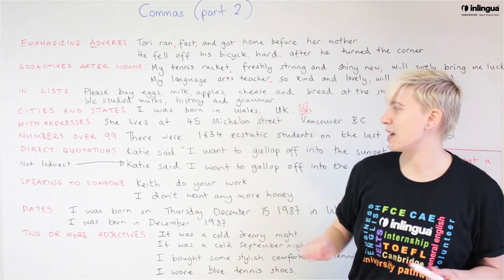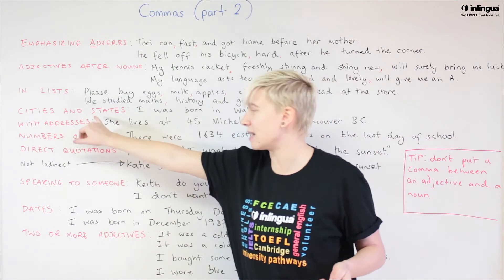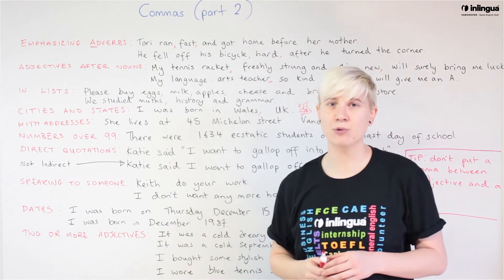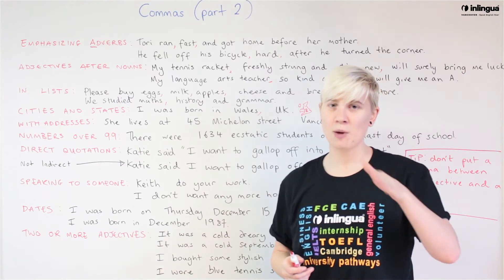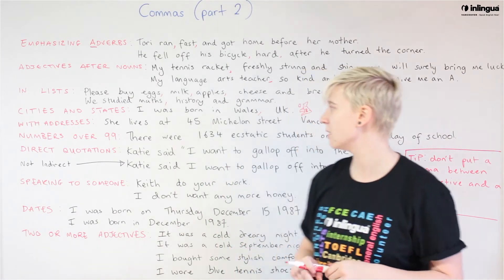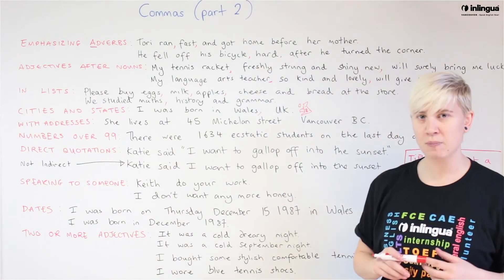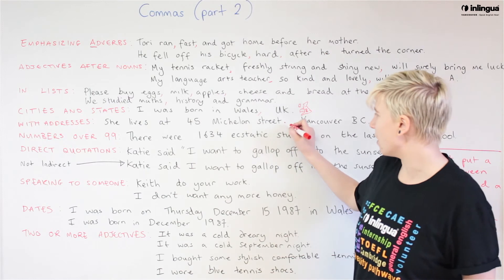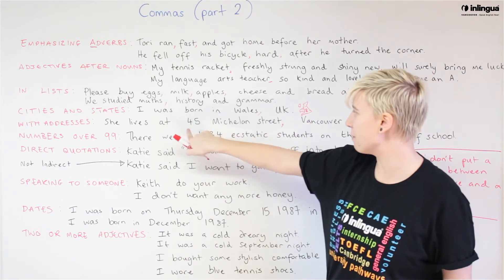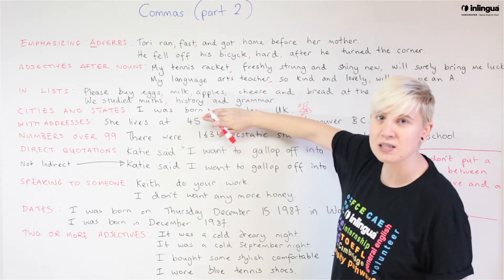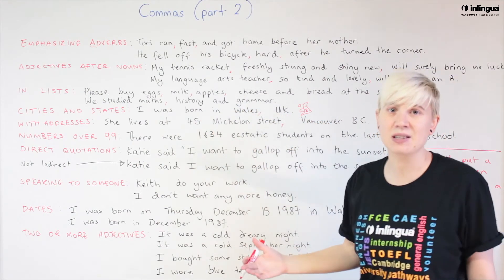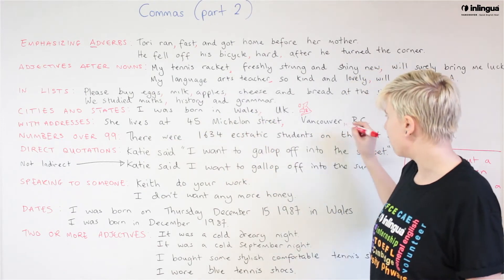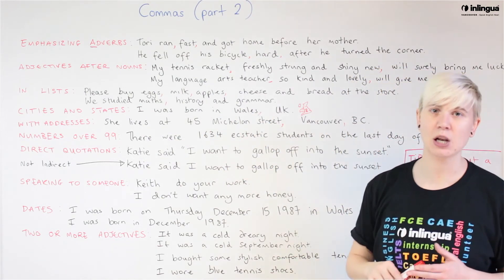This leads nicely to our next section: addresses. In addresses we often use cities and states and countries, and it follows the same rules — start with the smallest and use a comma to separate each different part of the address. For example: 'She lives at 45 Mitchell Drive, Vancouver, BC.' The first part, '45 Mitchell Drive,' is all one piece. Then Vancouver is our city and BC, or British Columbia, is our province.